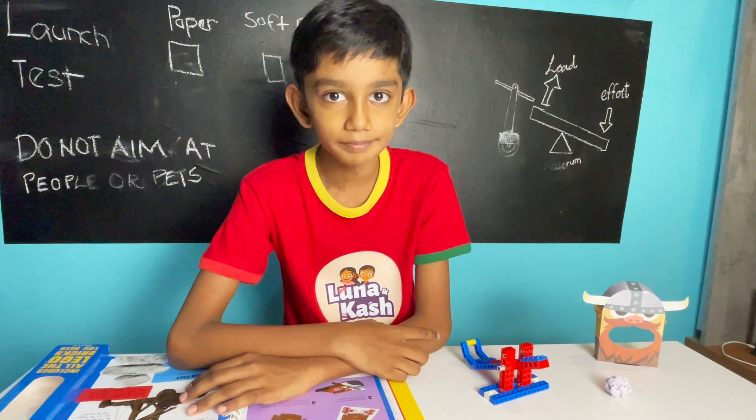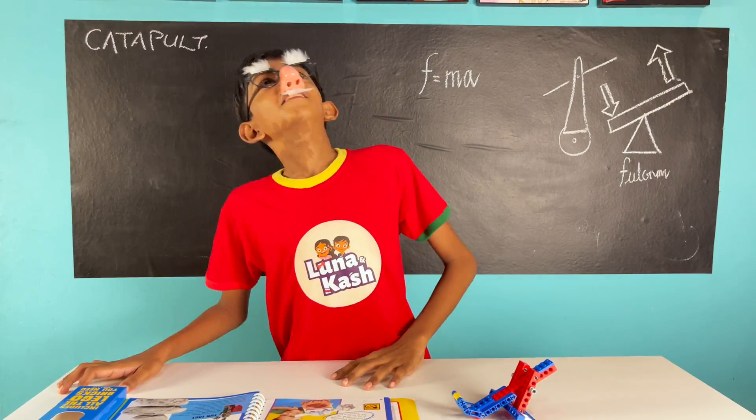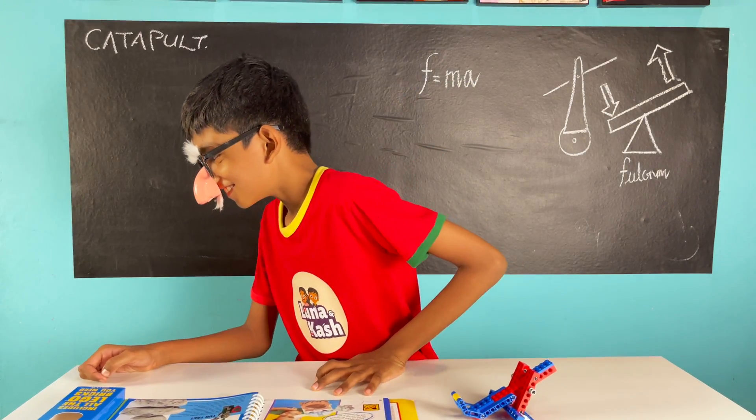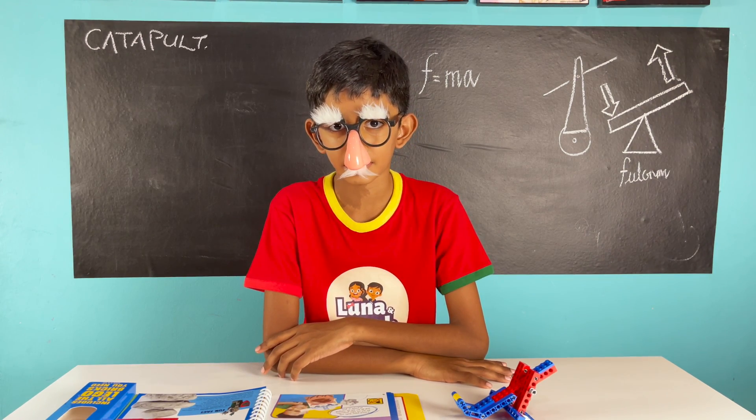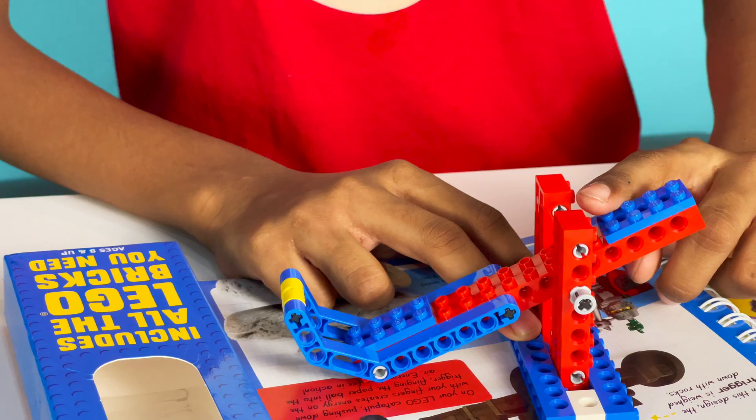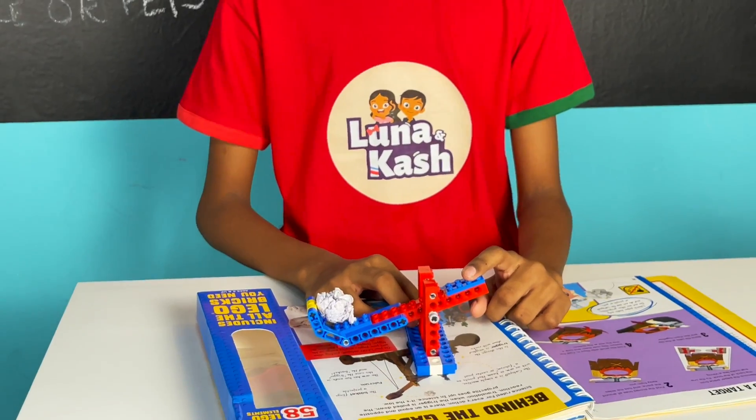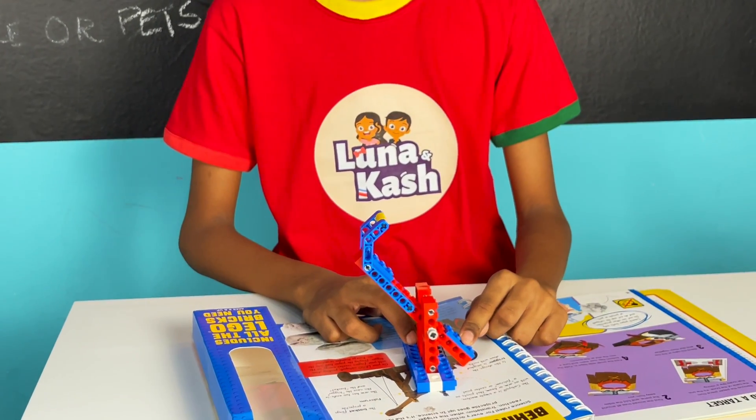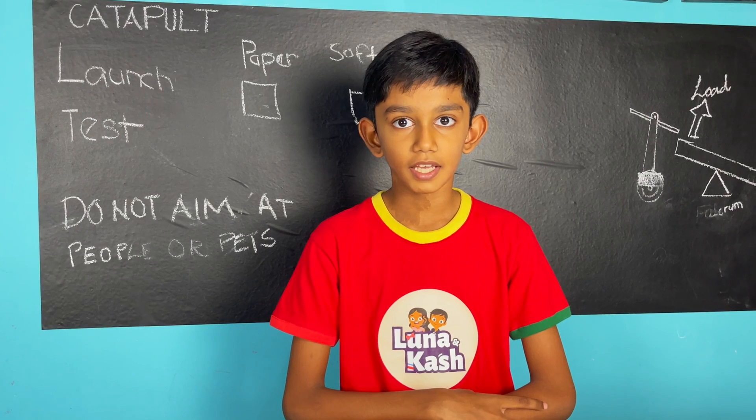We had lots of fun with the catapult. Now let's see what's behind the gadget. Newton's rule: for every action, there is an equal and opposite reaction. On a Lego catapult, pushing down creates energy on the trigger, flinging the paper balls into the air. This is simply energy transfer in action.